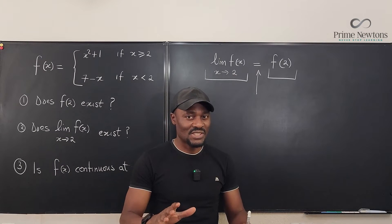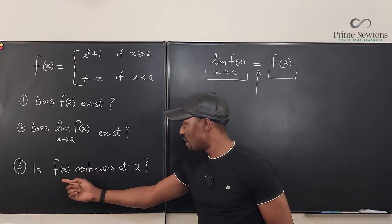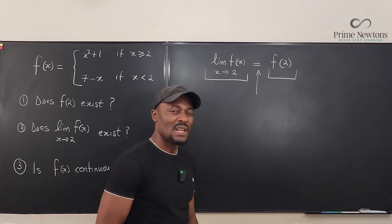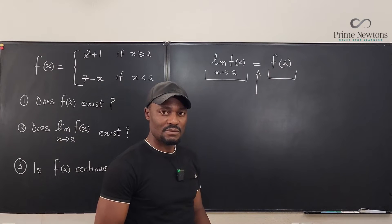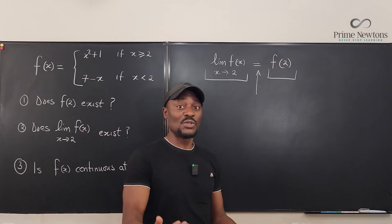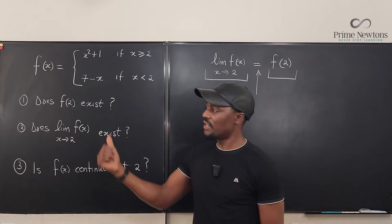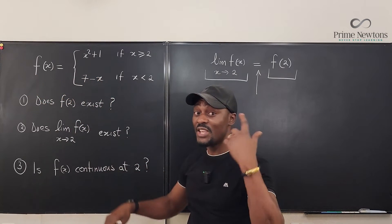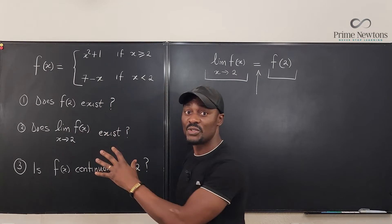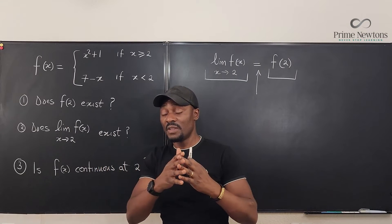With that understanding, we're going to answer each of these questions and then conclude whether f(x) is continuous at 2. Let's start from the right-hand side: what is f(2)? The value of a function at a point is basically what the y-component is — you plug in 2 into the function. The function is a piecewise function. It is defined in two ways depending on where you are on the graph.